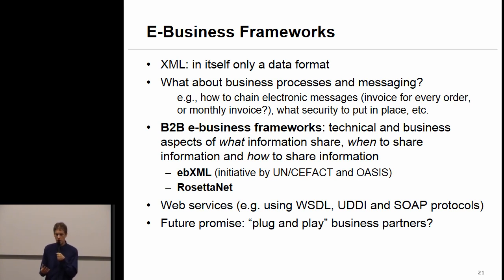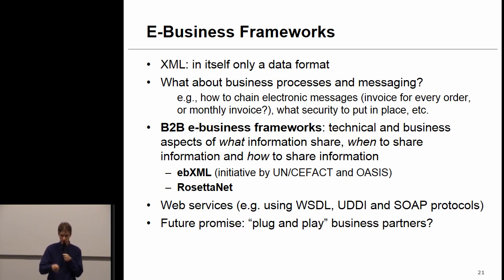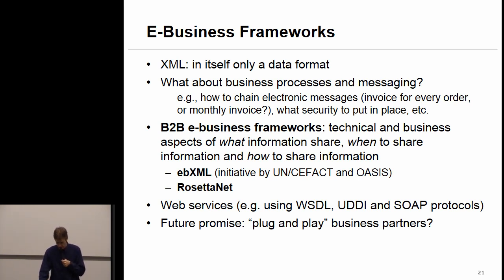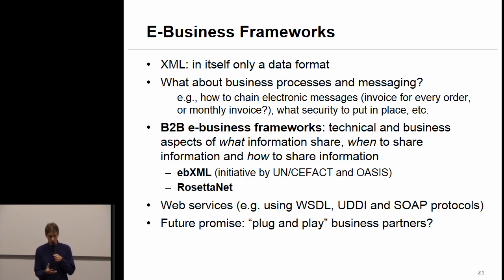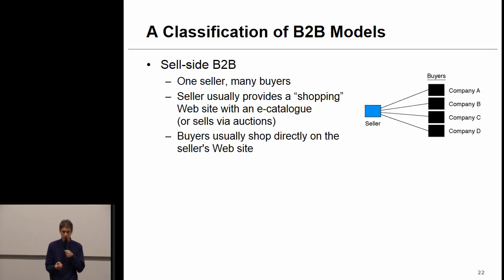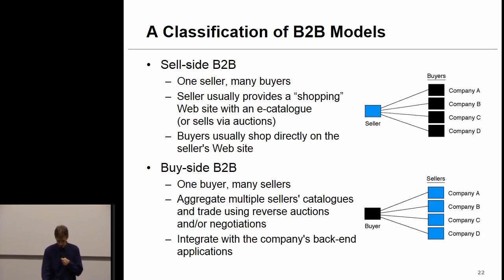EBXML and RosettaNet are going to specify the process steps — the steps one should follow in doing something particular, like issuing a purchase order. All of that in a web environment is then fully automated with web services, and the idea is to establish that plug-and-play architecture clarified earlier. So that's about the underlying technology — let's now look at the classification of B2B models.